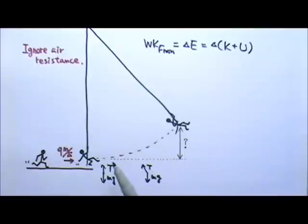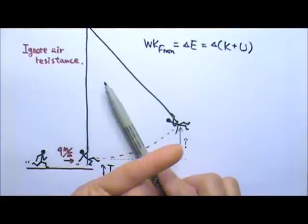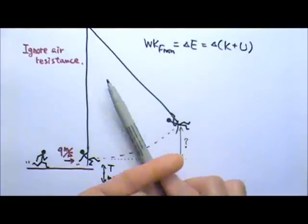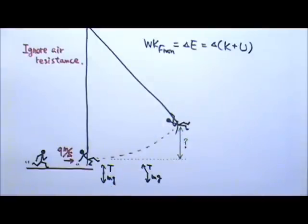At any moment, tension is in the radial direction, and at any moment, the displacement is tangent to the circle. So the entire time, tension is perpendicular to the displacement, so tension does not do any work.